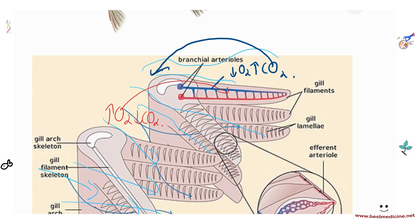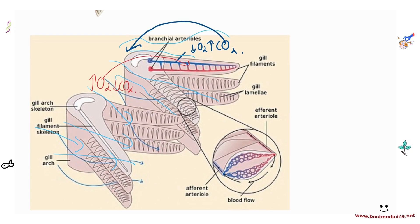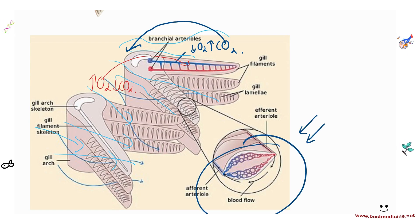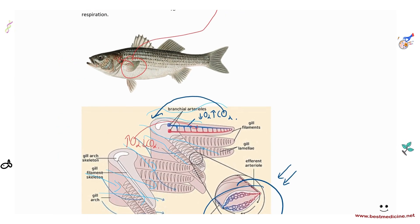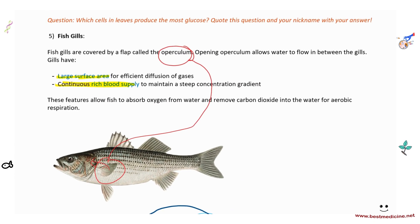Gill adaptations: first, the gills are very thin with a large surface area relative to their volume, which increases the rate of gas diffusion. Second, they are richly supplied by capillaries, meaning there is always fresh deoxygenated blood coming in and oxygenated blood leaving, maintaining a steep concentration gradient. These features allow fish to absorb oxygen from water and remove CO2 for aerobic respiration.